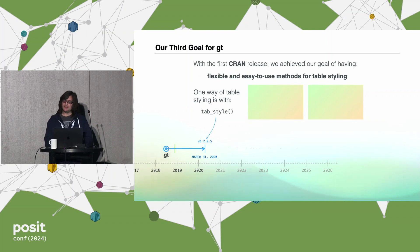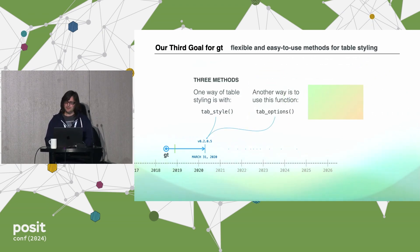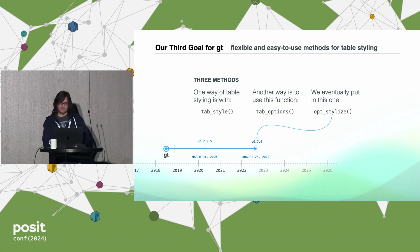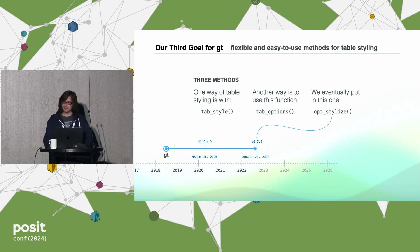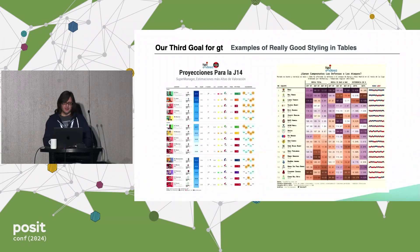Our third goal was flexible and easy-to-use methods for table styling. Table styling is super important — it makes the table look good. One way we had it in the initial release was using the function tab_style, which lets you add a style or multiple styles anywhere in the table. Another way, equally good, is using tab_options. And later we added opt_stylize — a way to quickly theme a table with one function and very few arguments. Because of styling, we can have awesome-looking tables.